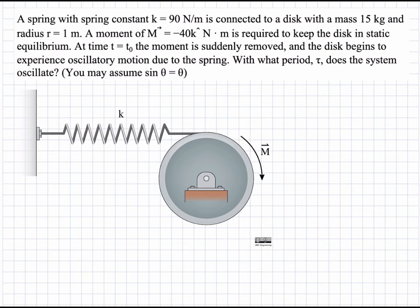In this problem, we have a disk attached to a spring k. Initially, we need to apply a moment of negative 40 Newton meters to maintain the system in equilibrium. At time t equals zero, this moment is suddenly removed and the disk starts to oscillate. We're asked with what period tau does the system oscillate? We can assume the small angle approximation where sine of theta is approximately equal to theta, and cosine of theta is approximately equal to one.